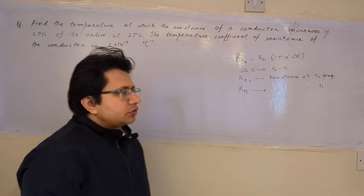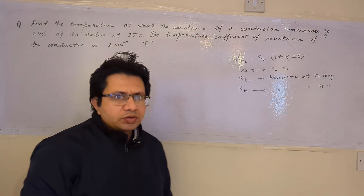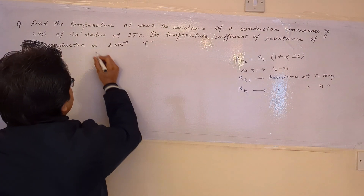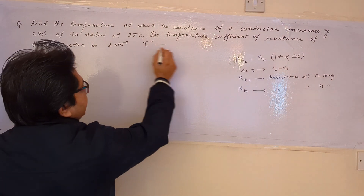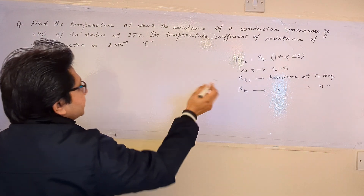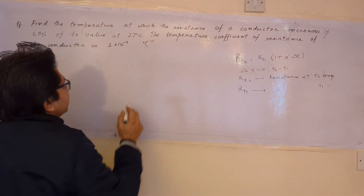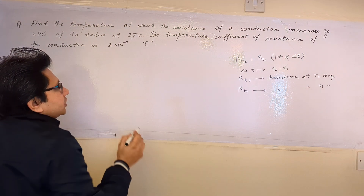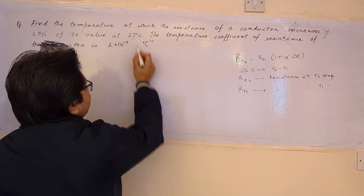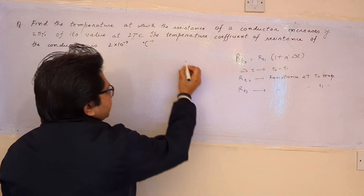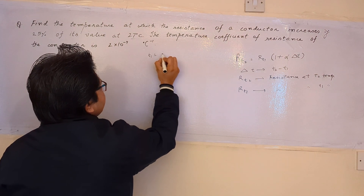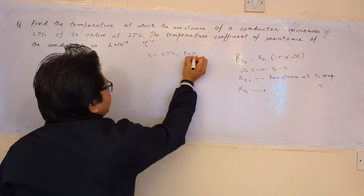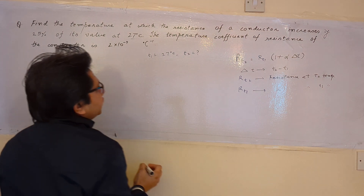This is the formula we have to use to solve this problem. We have to find the temperature at which the resistance increases by 25 percent of its value at 27 degree Celsius. So T1 is given as 27 degree Celsius, and T2 is what we have to find out.